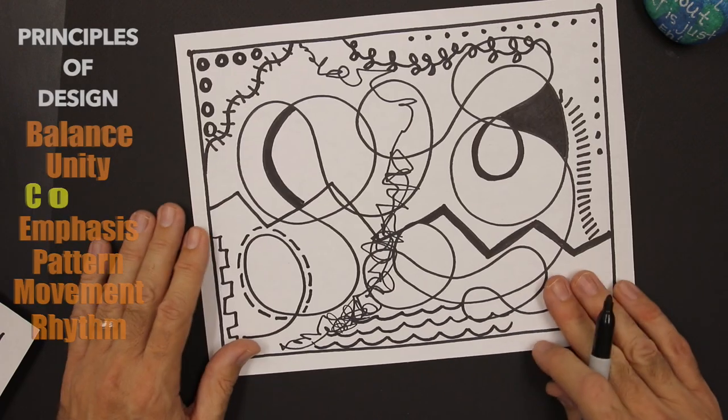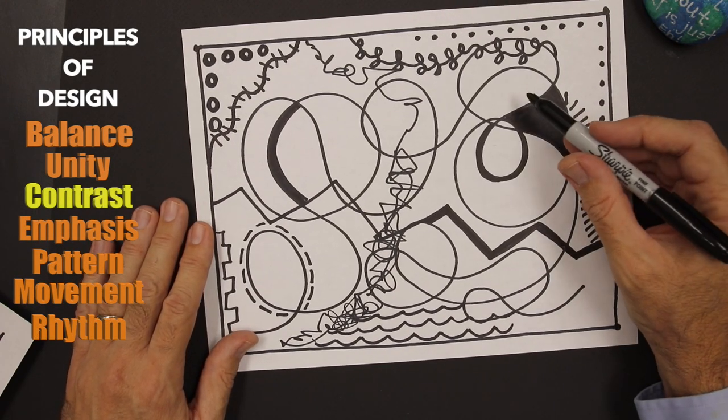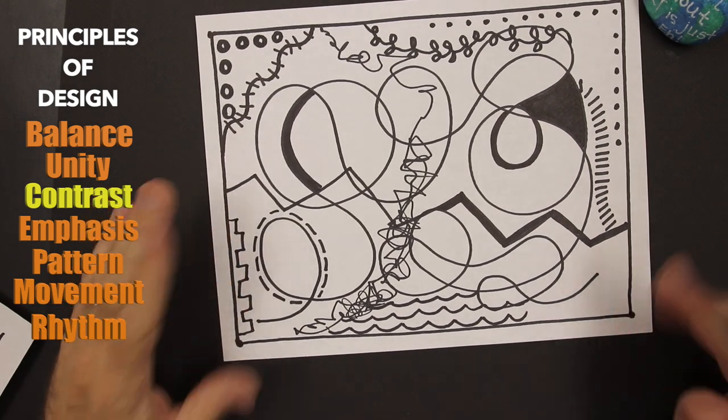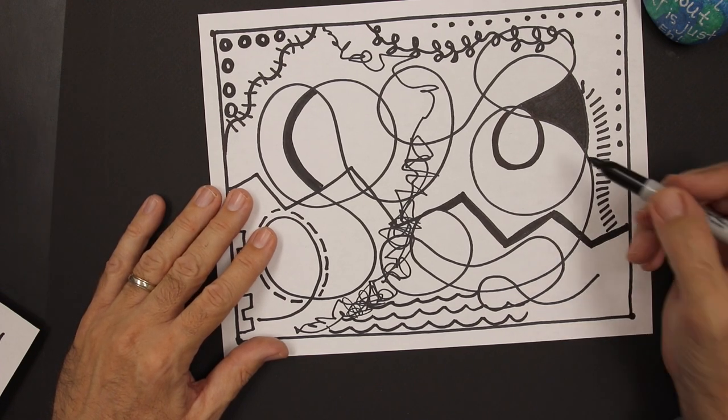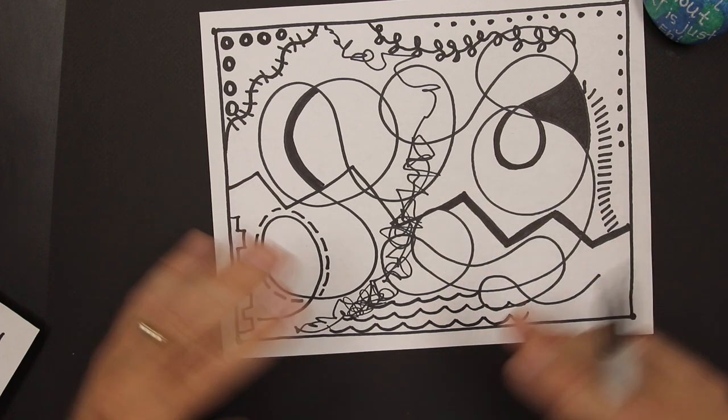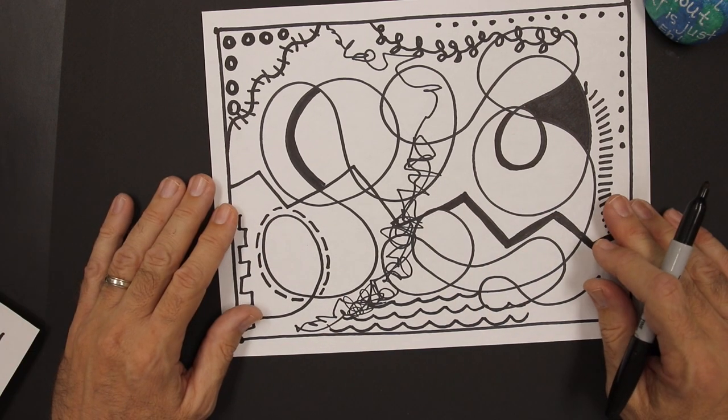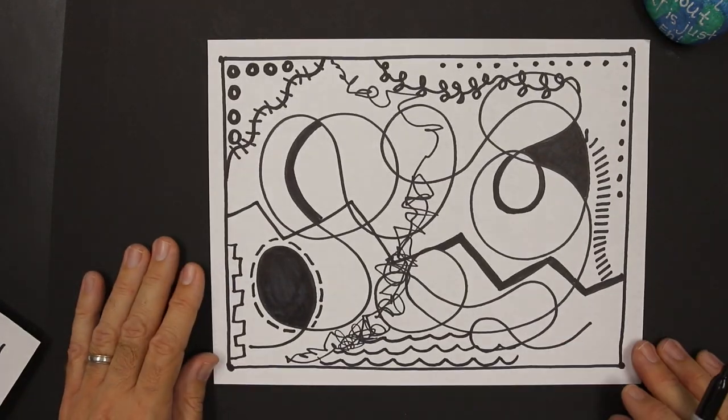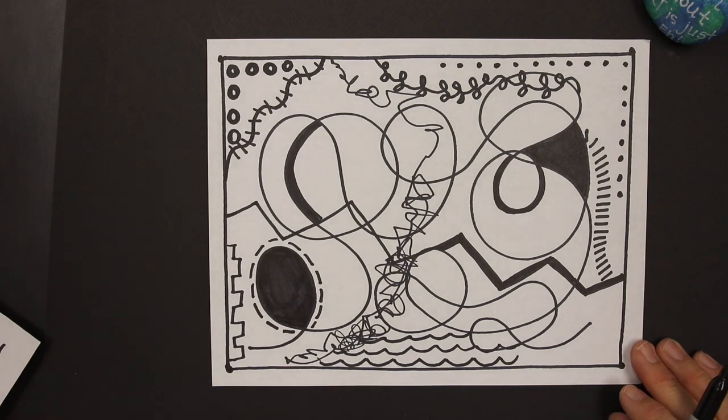So now we have something called contrast. We have the dark contrast compared to the light contrast. Dark and light. And so when you see our thick lines and our thin lines, you see some shapes that are darkened in. Some that stay light. It gives us variety. It makes our artwork a little more interesting. All right. Here we go. So now I'm going to go ahead and fill in a few more shapes that I see. I'm not going to fill in everything black. I'm just going to fill in a few around the paper and try to make it as balanced as possible. So I'm going to do that now.